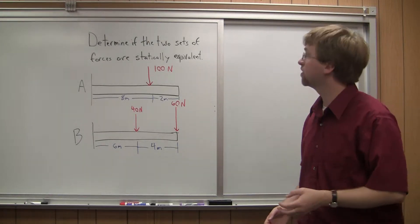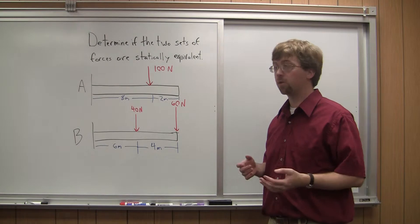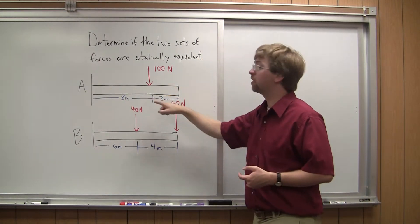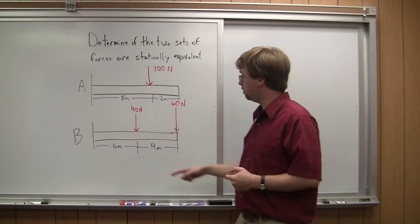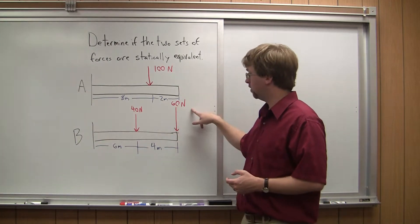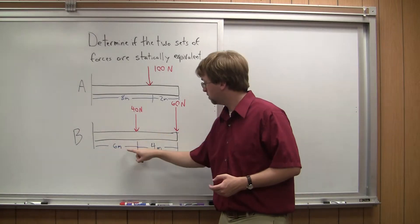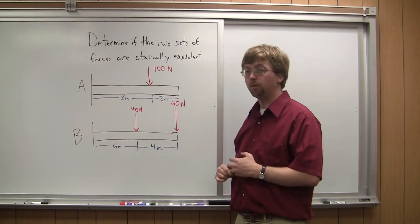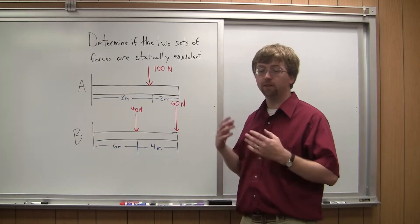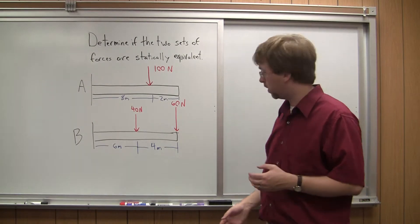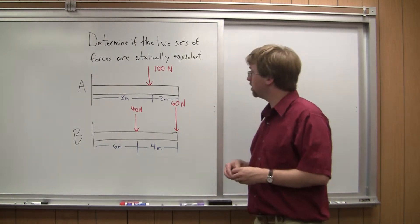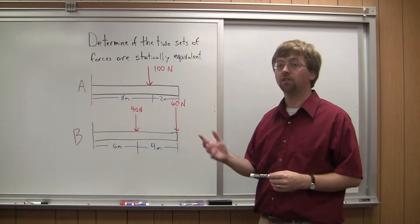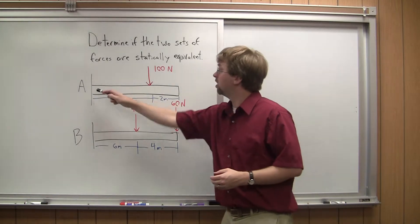For this problem we're asked to determine if these two sets of forces are statically equivalent. In A, we have a 100 Newton force acting 8 meters out on a cantilever beam. In B, we have a 40 Newton force and a 60 Newton force acting 6 meters and 10 meters out, respectively, on cantilever beam B. We have the same beam in both cases but two different sets of forces.